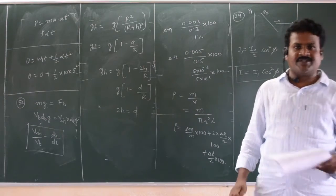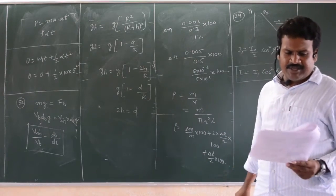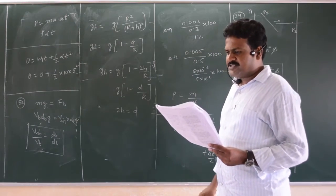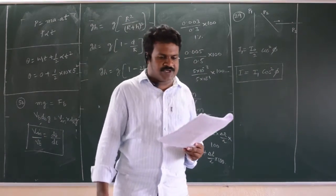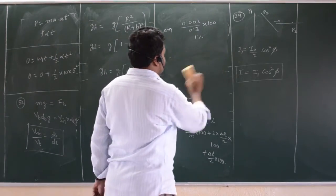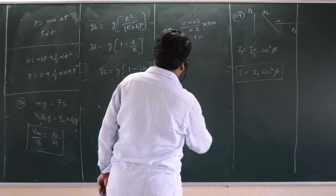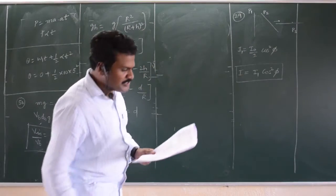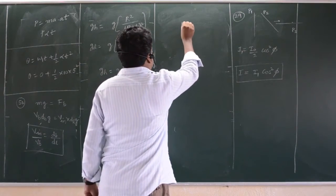Young's modulus of a perfect rigid body, this I told several times in our class, it is infinity. Certain amount of heat energy, fraction of heat energy converted into work is 1 minus 1 by gamma, where gamma is the ratio of specific heats. Fraction of heat energy converted is equal to 1 minus 1 by gamma.